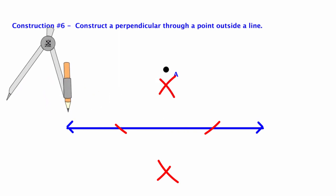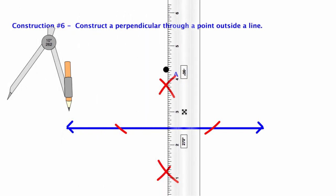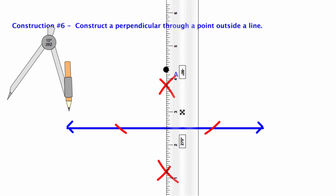And once again, you really have three points. You have the two X's and you have point A to line up your straight edge. And draw your perpendicular.